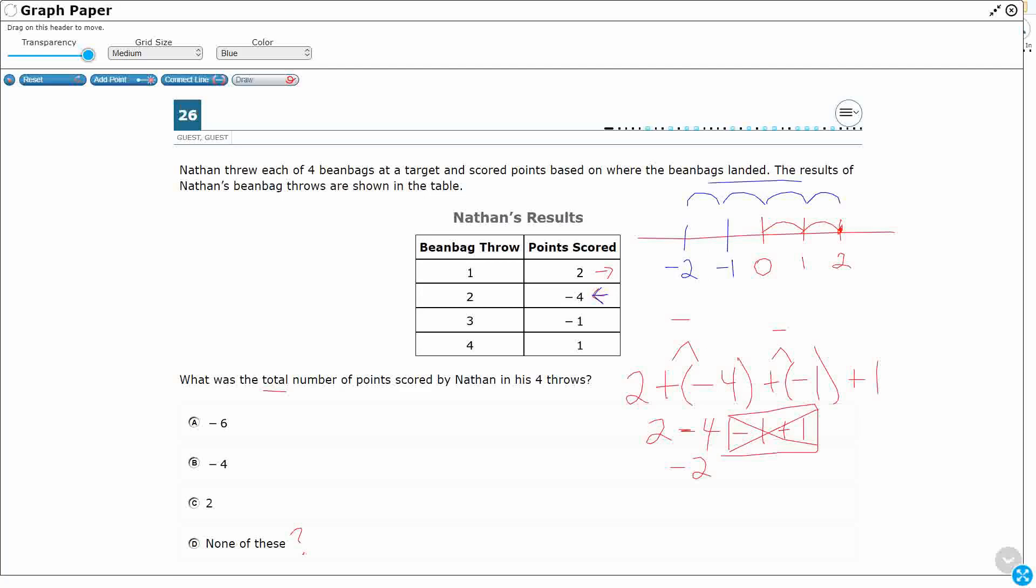Now I need to go minus 1. So I'm going to go to the left one more time. Starting at minus 2, I'm going to go over one more time. It's going to end up being minus 3. So here's your minus 4. Minus 1. We can label everything so we can see it here.